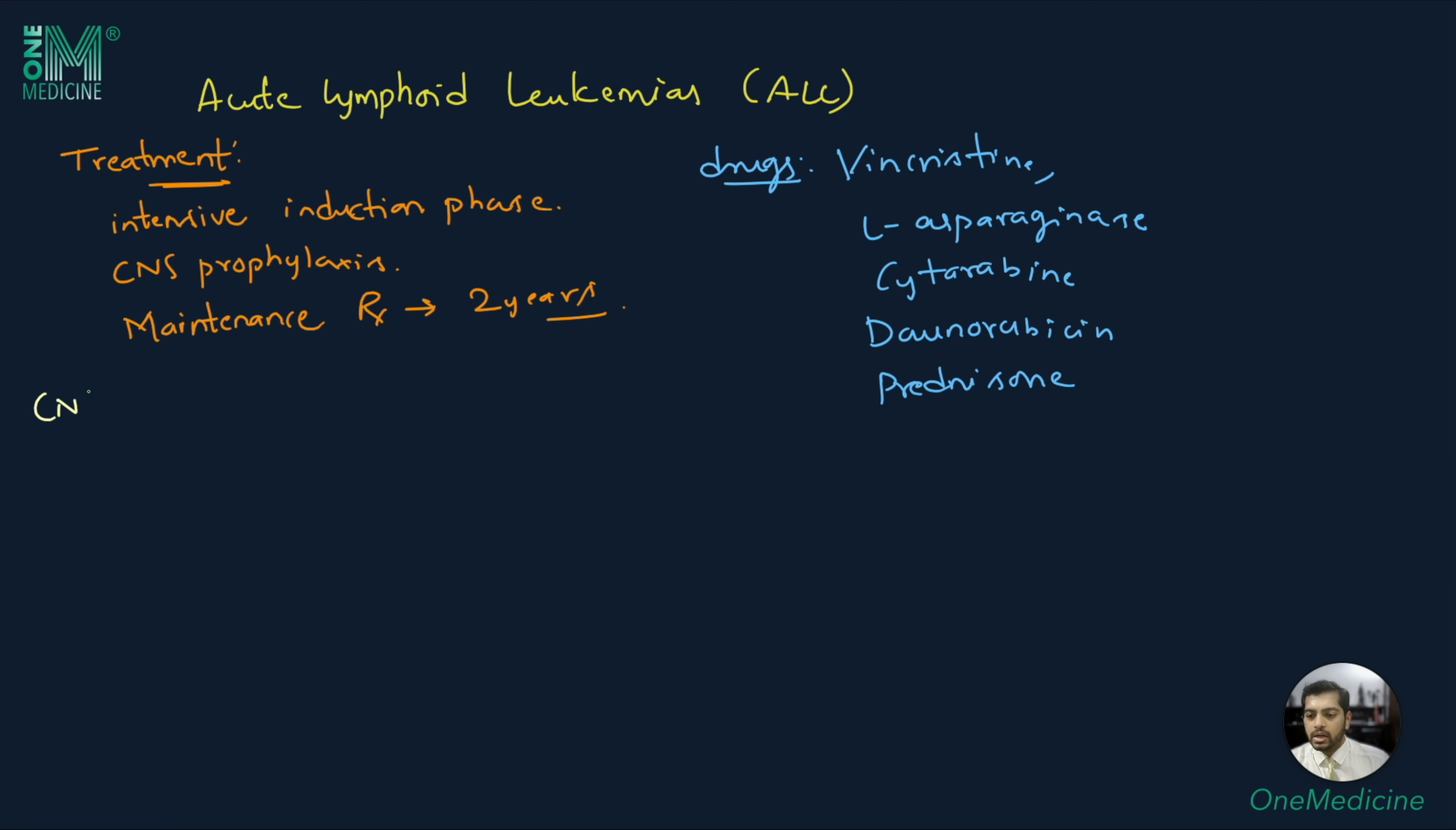For CNS prophylaxis, intrathecal methotrexate is used. Instead of this, even high-dose methotrexate can be given systemically. Cases of relapse can be treated with bone marrow transplantation. However, the cure rates are quite low, with about 30%. With this therapy, long-term survival can be achieved in up to 60-65% of the patients.